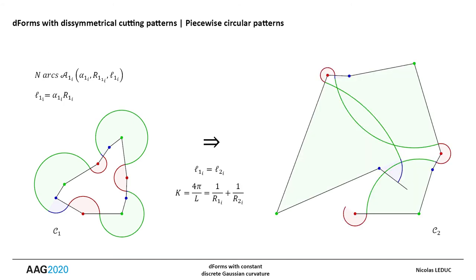Once the first cutting pattern is chosen, C2, the second pattern, is then completely defined, since the lengths of the arcs must be identical two by two to be assembled, and the radii of curvature are linked by the constant Gaussian curvature constraint.